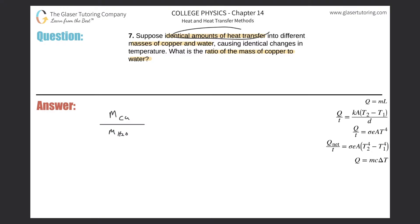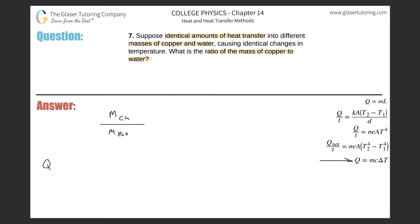They're also saying identical amounts of heat transfer causing identical changes in temperature. So I'm thinking: how are heat energy, mass, and temperature related? The calorimetry equation on the right-hand side. I can write this equation out for each object. The heat transferred to or from copper equals the mass of copper multiplied by the specific heat of copper multiplied by the change in temperature of the copper.